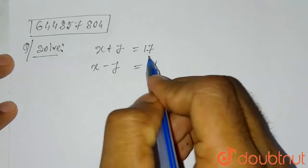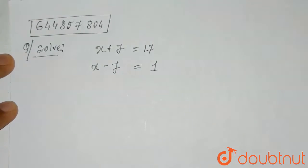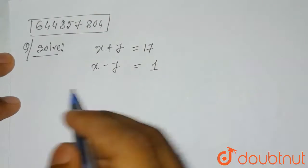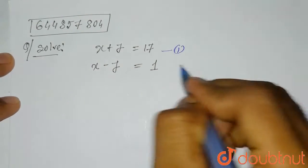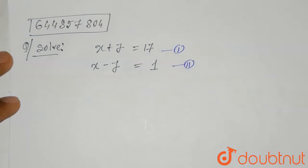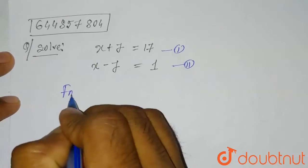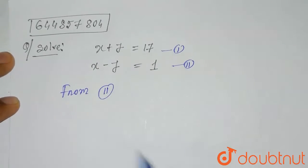x plus y equals 7, x minus y equals 1. So we're given two equations to solve. Let's say this is the first equation, this is the second equation. From the second equation what we can write...